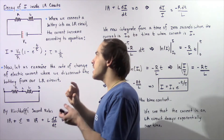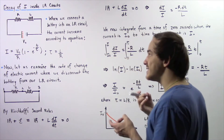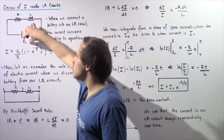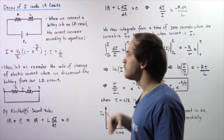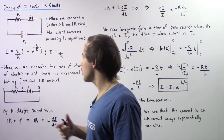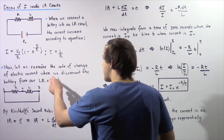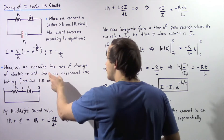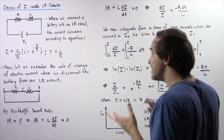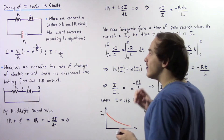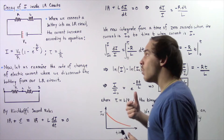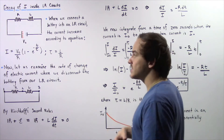Now let's examine the opposite — what happens to the electric current when we remove the battery from the circuit. The moment we disconnect the battery, the electric current begins to decrease, and we want to describe this decrease mathematically.